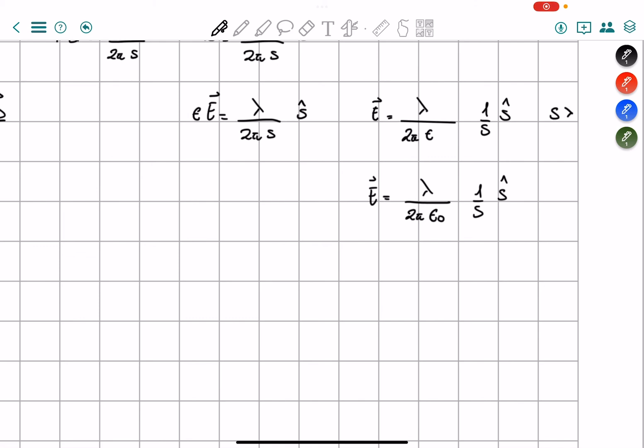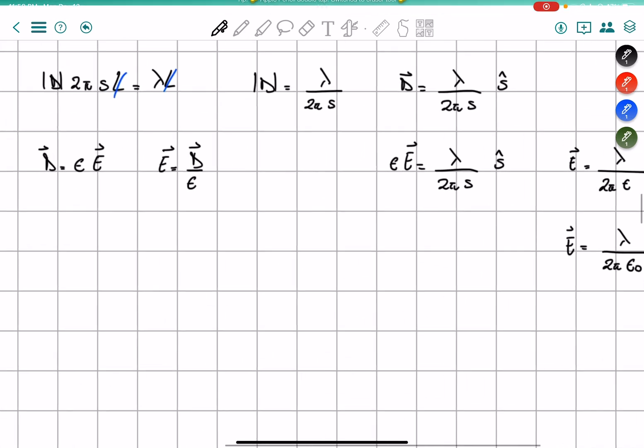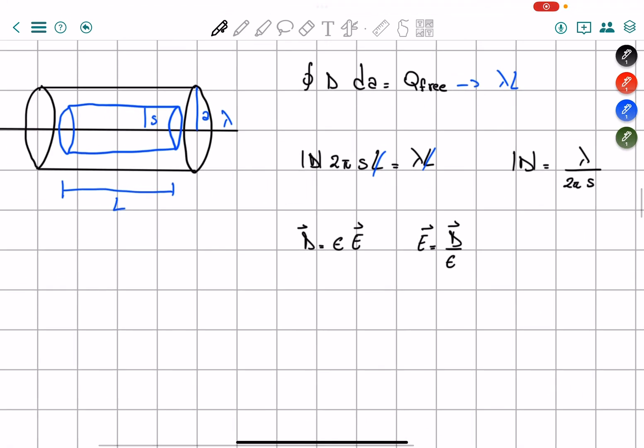So this is when S is less than A, and this is for when S is greater than A, by using S as the radius of our Gaussian surface and A the radius of our dielectric that is around our wire.